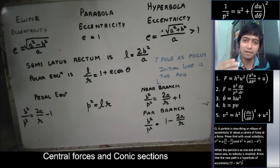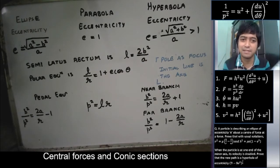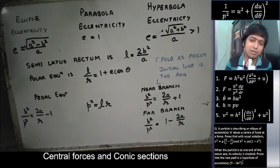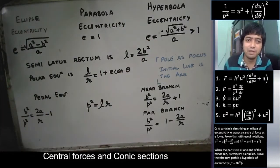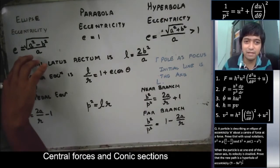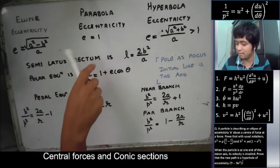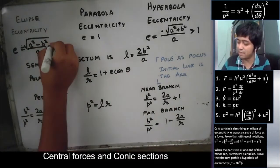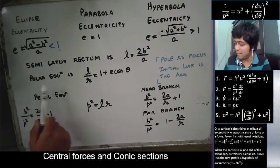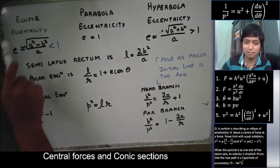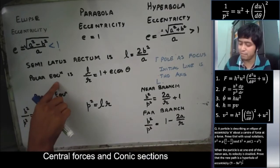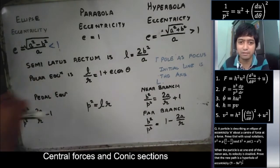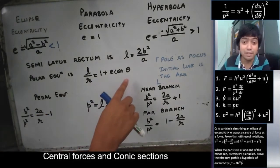But before that, we need to have some basic idea about conic sections learned in lower classes. We have the ellipse, the parabola, and the hyperbola — we also have the circle, but that can be easily dealt with. For eccentricity e: it equals 1 for the parabola, is greater than 1 for the hyperbola, and less than 1 for the ellipse. The semi-latus rectum is L = b²/a, for the ellipse and hyperbola. We also have the polar equation, common for all three: L/r = 1 + e·cos θ.